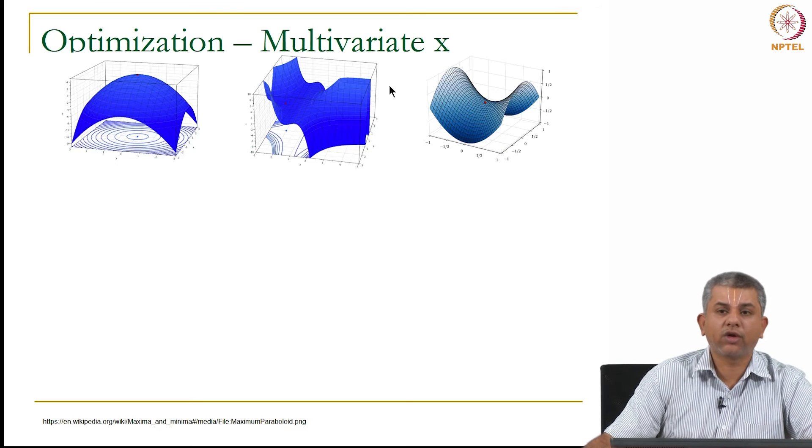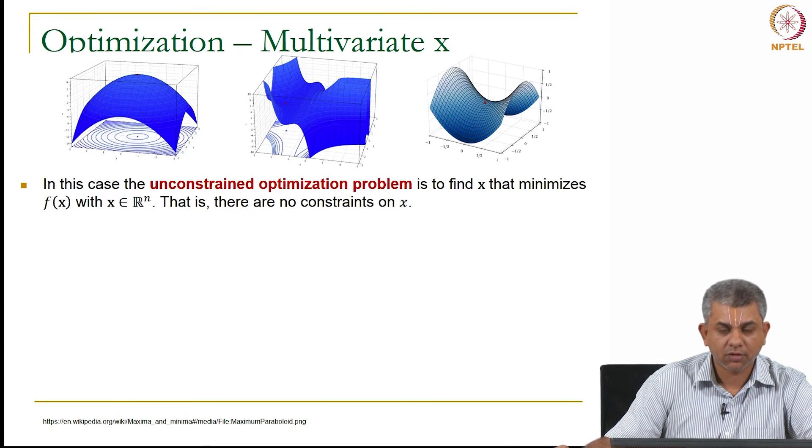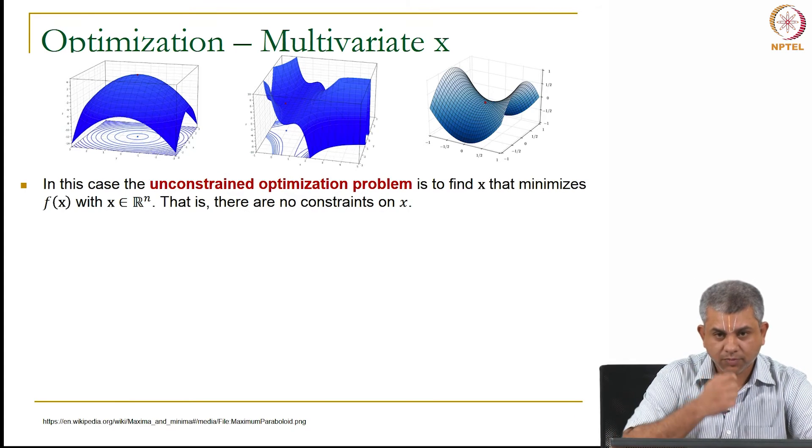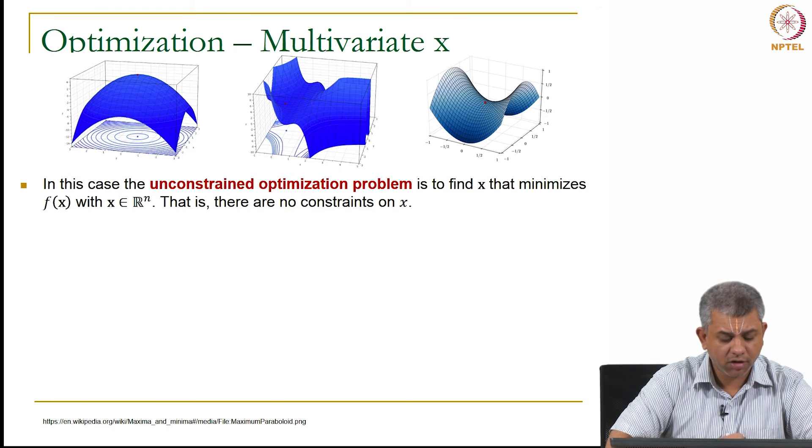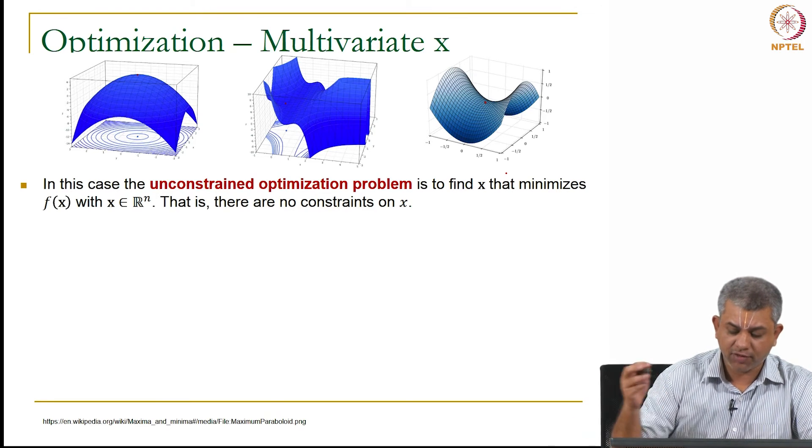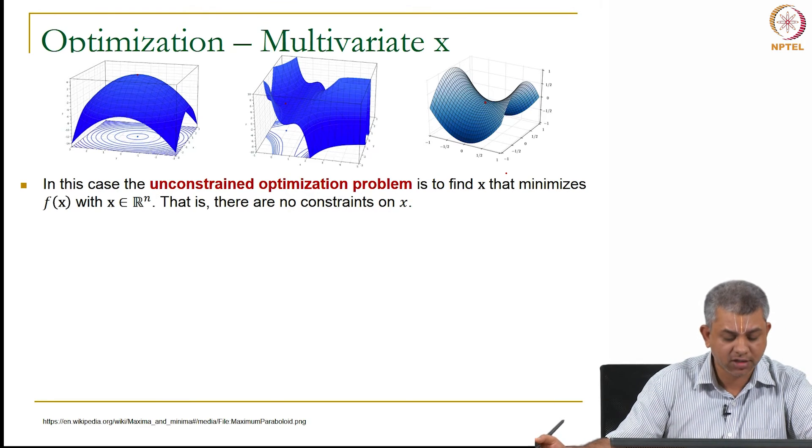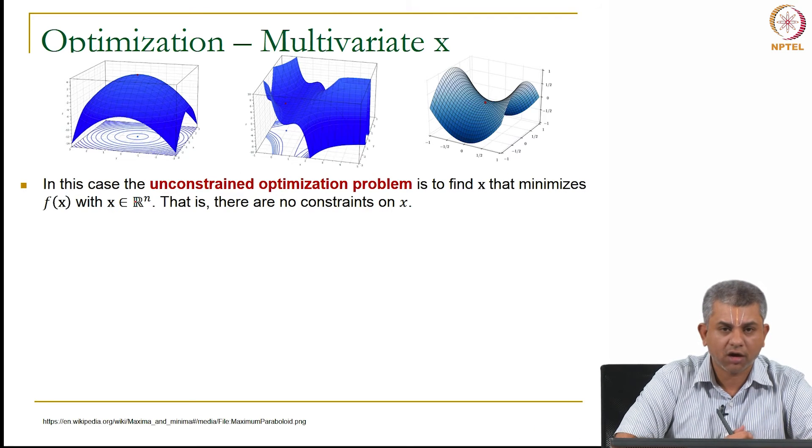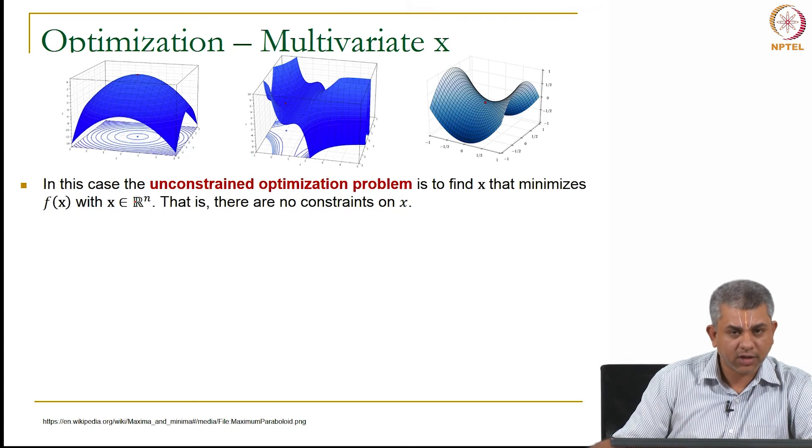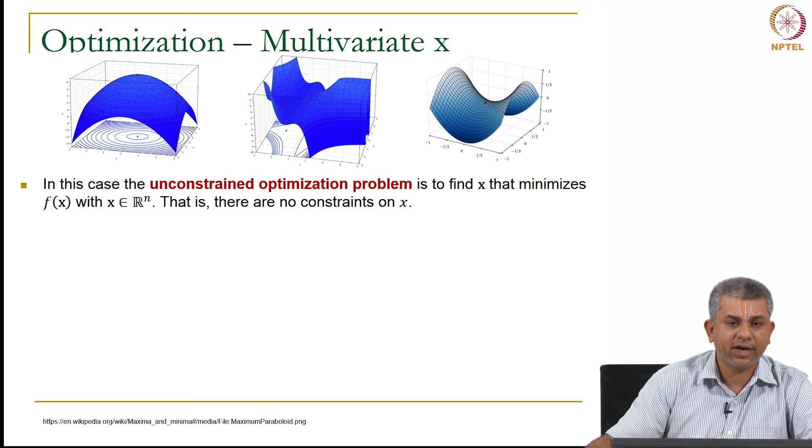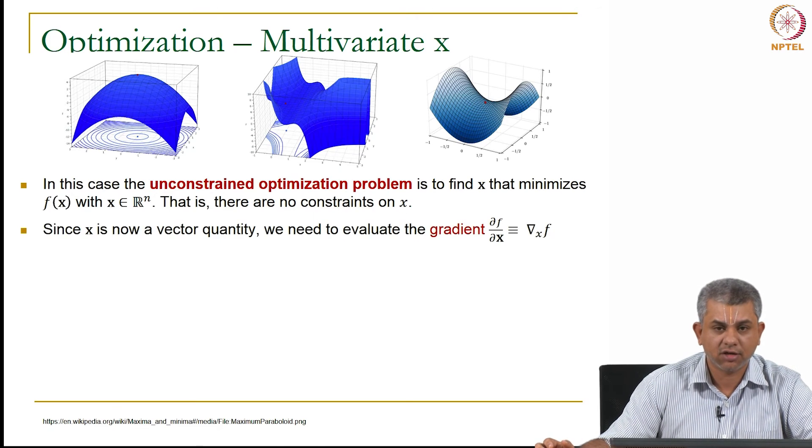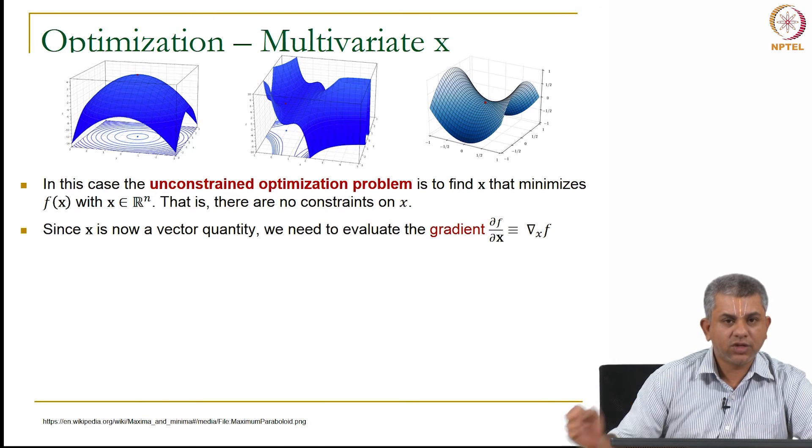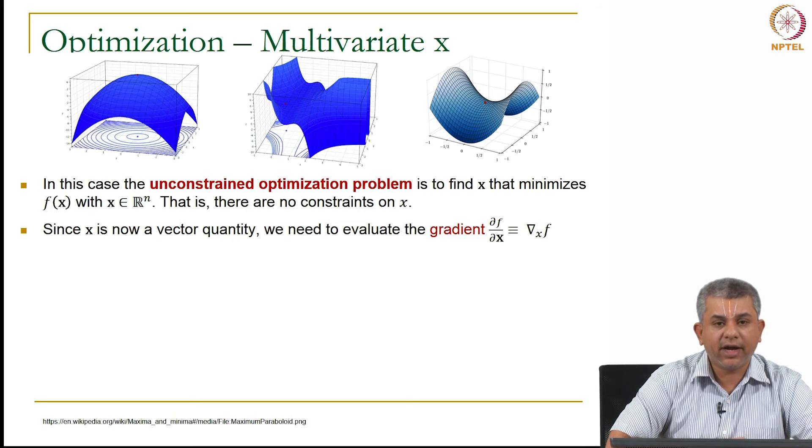So now let us look at the multivariate case. In this case you are trying to find x that minimizes f of x but x now belongs to R^n instead of simply belonging to R, now it belongs to R^n. Once again we are looking at the unconstrained problem, there are no constraints on x.